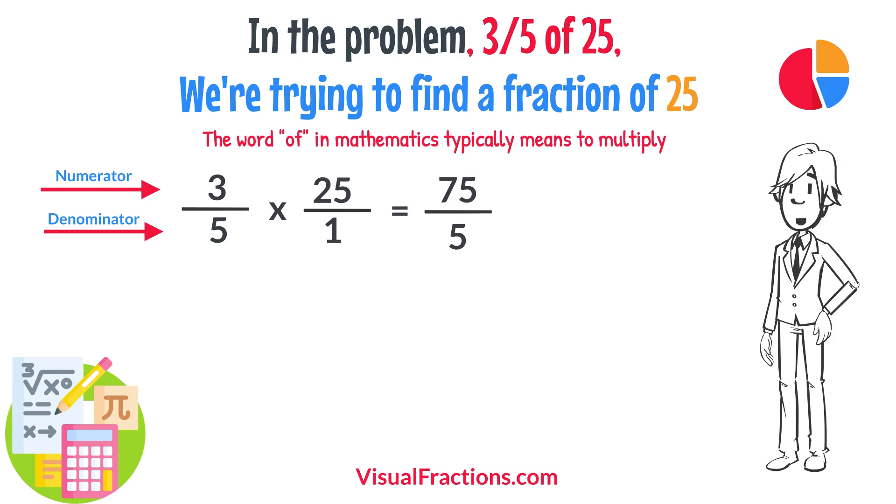To find the final answer, divide the numerator by the denominator. So, 75 divided by 5 equals 15. And there you have it, 3 fifths of 25 is 15.